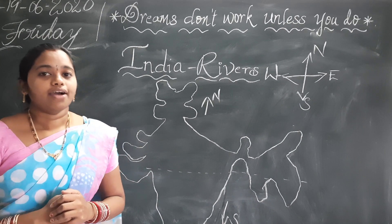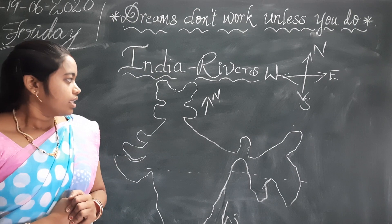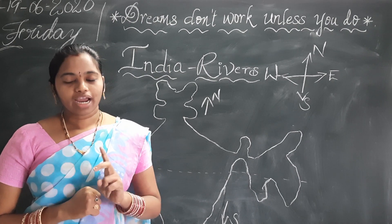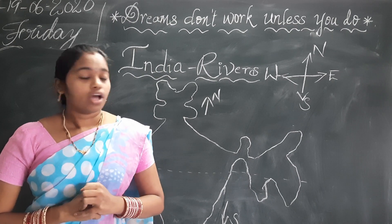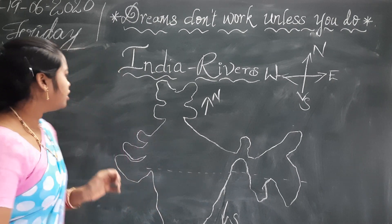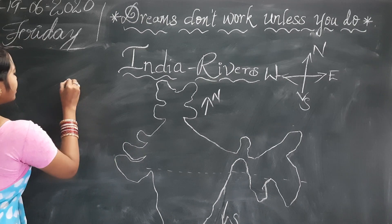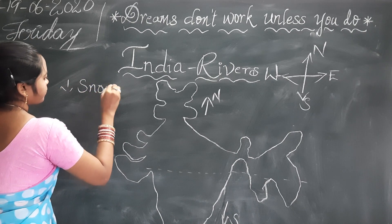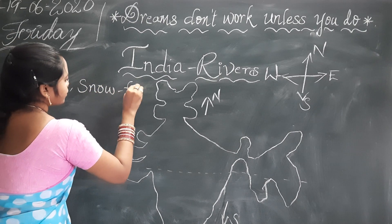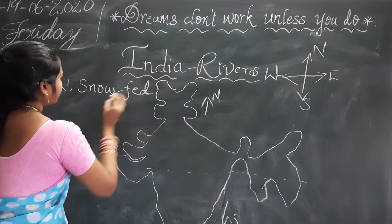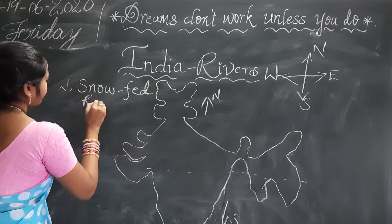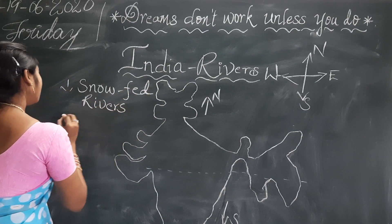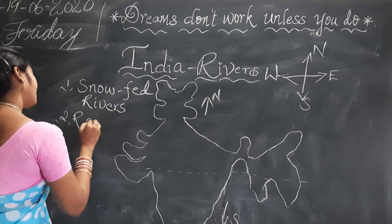We have two kinds of rivers. Those are snowfed rivers and rainfed rivers.